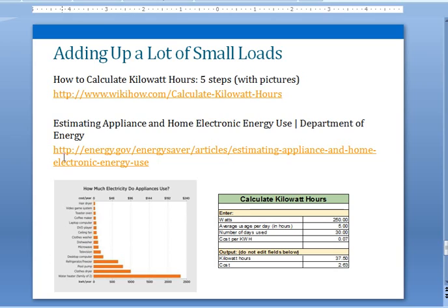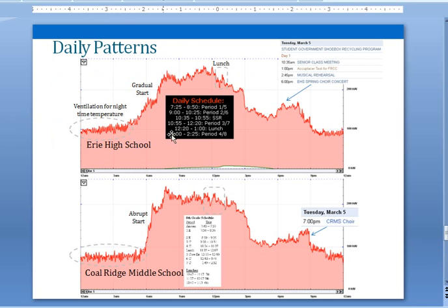Going back to base loads — this is a matter of adding up all the small things that are plugged in and operating. There are good tools in this presentation, and you have a plug load meter in your energy kit — take advantage of that. Make a list, go around, add things up, and figure out what you can unplug, power down, or what has power-saving modes. Computers individually don't use a lot of power, but when you have many computers that adds up. Make sure computers are powered down when not needed and overnight — that makes a big difference, as do other plug loads in the school.